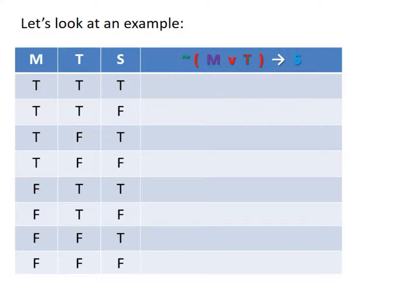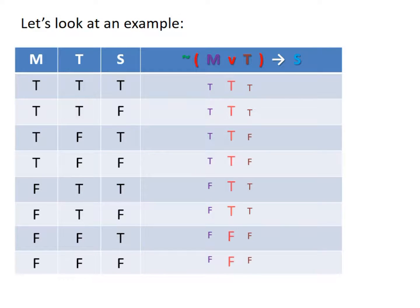Looking at the right-hand side, I've color-coded the statements so you can see the order we work through them. The first step is to write in the columns for M and T again — copied directly from the left. Next, the least dominant connective is the disjunction in brackets, shown in red. Putting M and T in a disjunction gives us: true, true, true, true, true, true, false, false. Then the green negation comes in and we negate that entire column, leaving us with six falses and two trues.